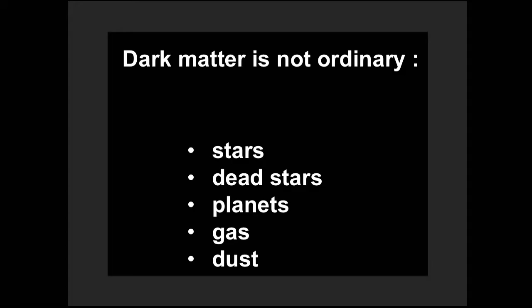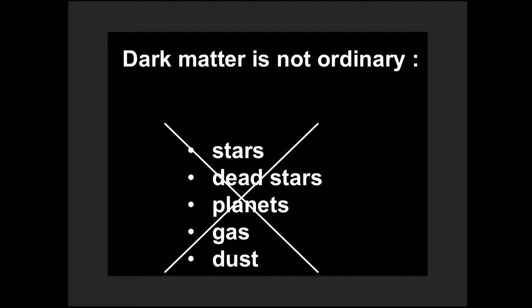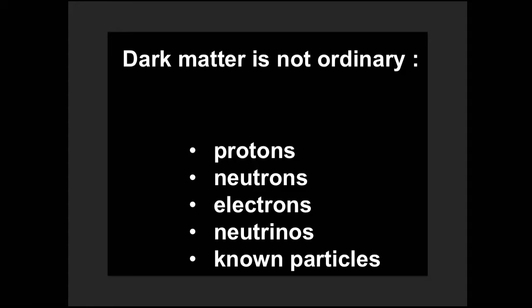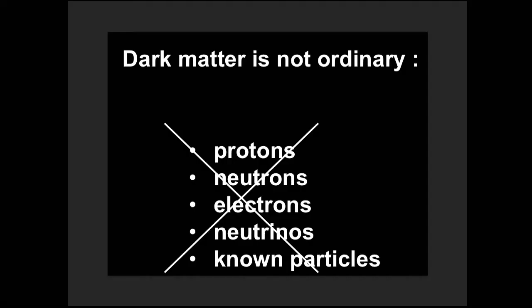It's not any of those things, dark matter is not the ordinary stuff we see out there in the universe. It's also not made of the ordinary things that go into making this lectern or you or the seats or the air in the room, protons, neutrons, electrons, or even some of the other particles that we know in the standard model. It's none of the known particles. All of those things, we know how much of them was around when the universe was a few minutes old. And there's not enough of them to make dark matter.